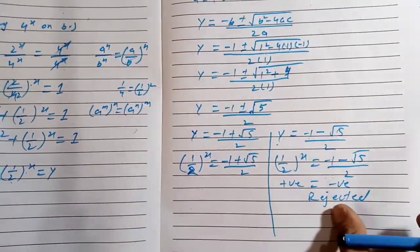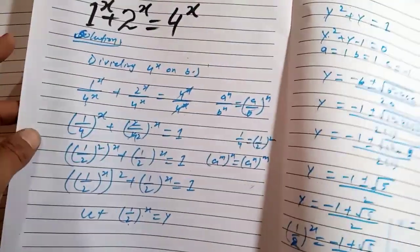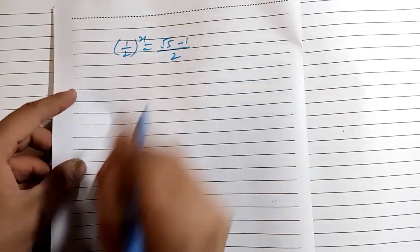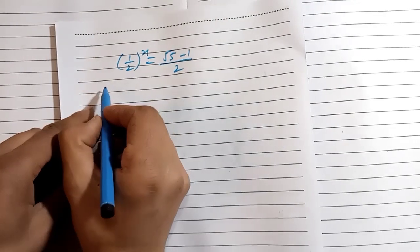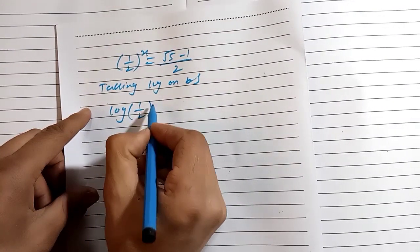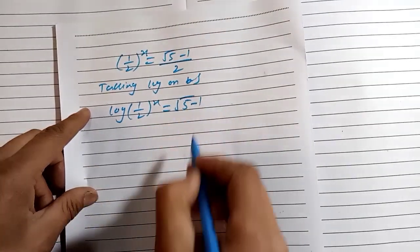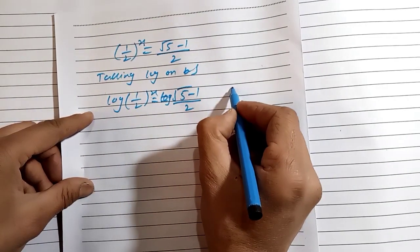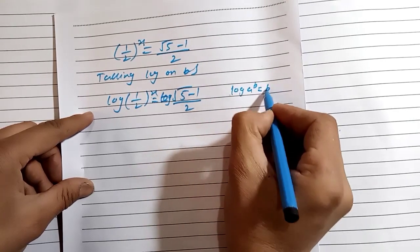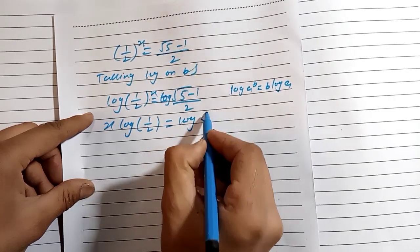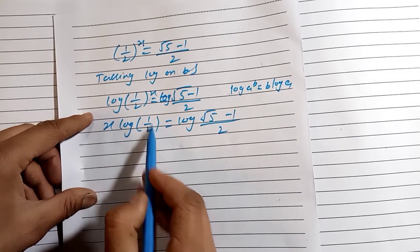So we have (1/2)^x = (√5 - 1)/2. To find X, we take the logarithm of both sides. This gives: x · log(1/2) = log((√5 - 1)/2). Dividing both sides by log(1/2), we get x = log((√5 - 1)/2) divided by log(1/2).